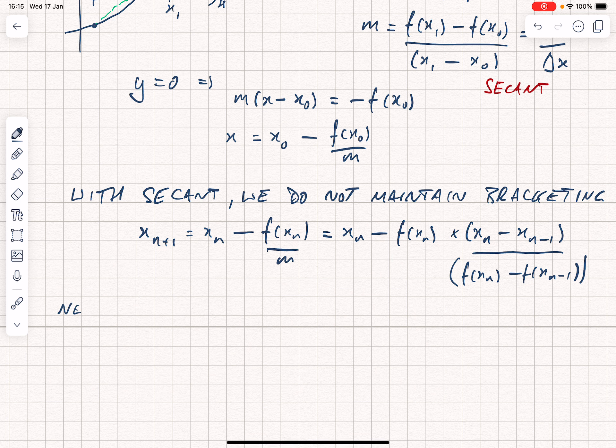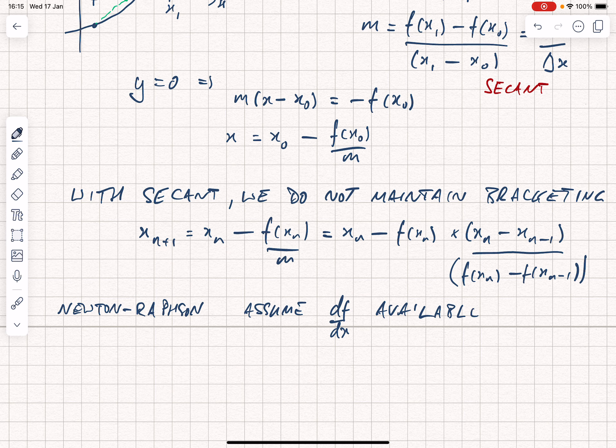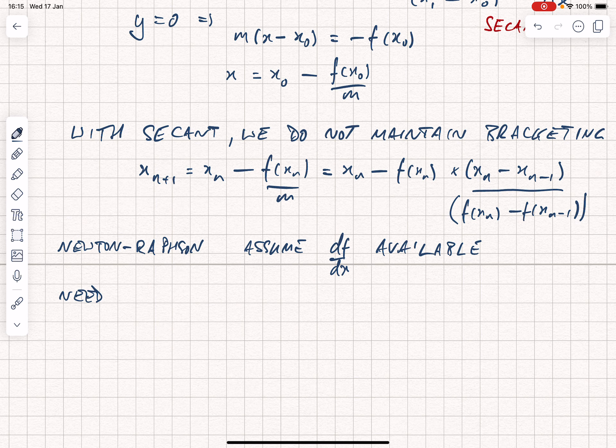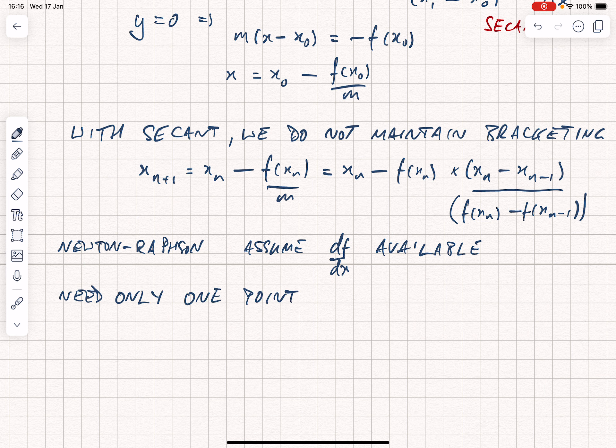With the Newton-Raphson, we have to have an analytic gradient. We assume that df/dx is available analytically. Then we only need one point at each step. What we write is x(n+1) is equal to x(n) minus f(xn) divided by f'(xn). And remember, of course, that f' is equivalent to df/dx.